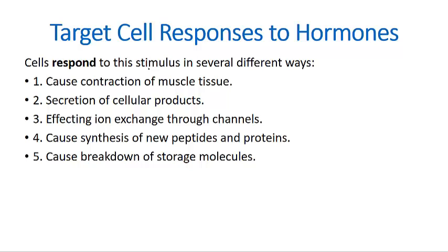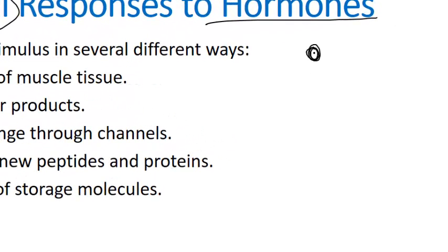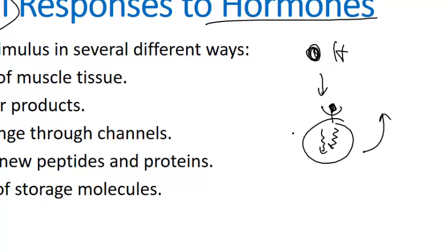Let's first talk about the general view of the target cell response to hormones. There are different types of target cells present for different types of hormones — not all hormones interact with the same type of cell. Hormones bind to the receptor to initiate the cellular response to a chemical signal, and the target cell converts that signal into a biochemical change inside the cell.